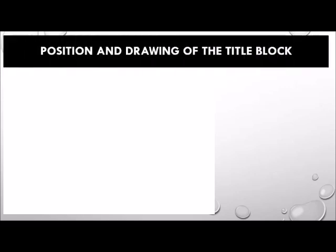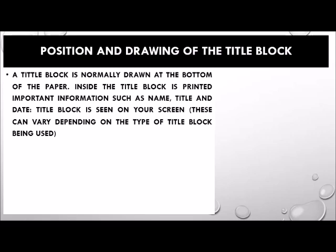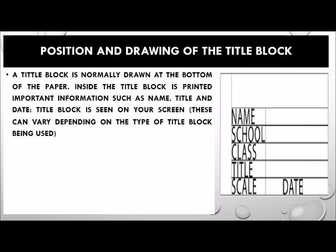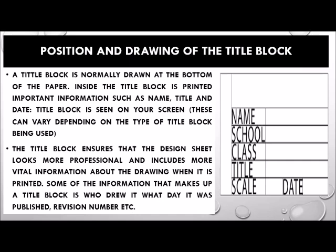Position and drawing of the title block. A title block is normally drawn at the bottom of the paper. Inside the title block, important information such as name, title, and date is printed. The title block ensures that the drawing sheet looks more professional and includes more vital information about the drawing when printed, such as who drew it, what day it was published, and the revision number.